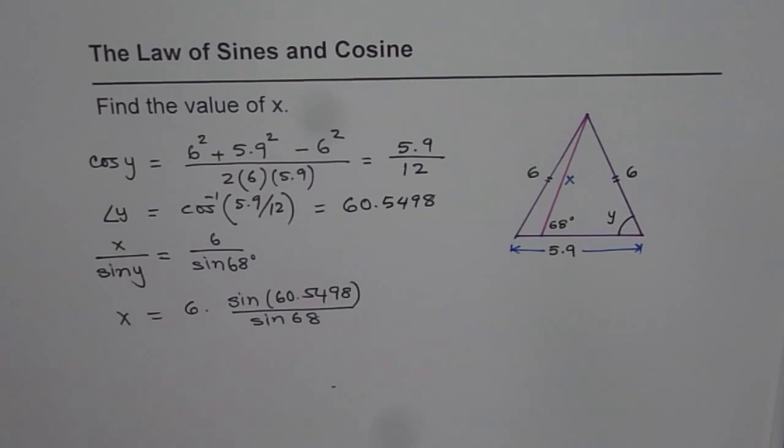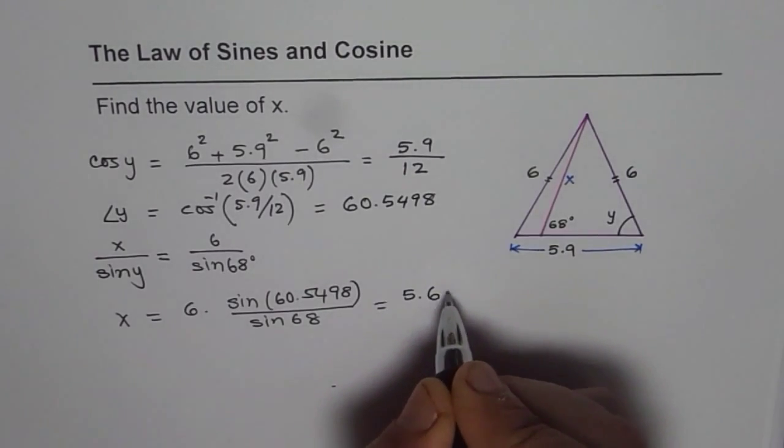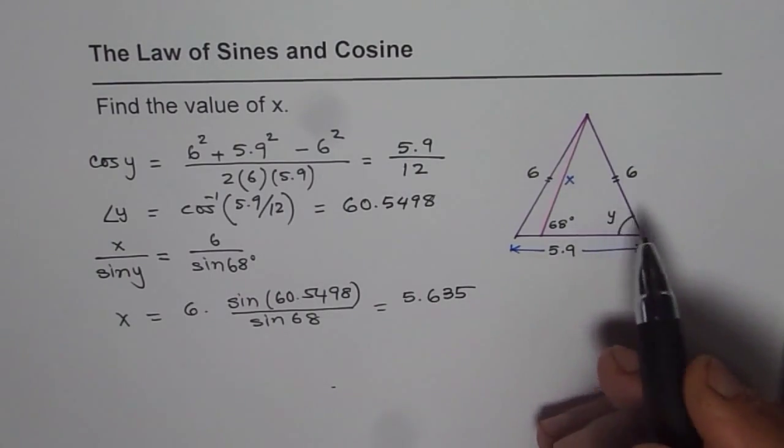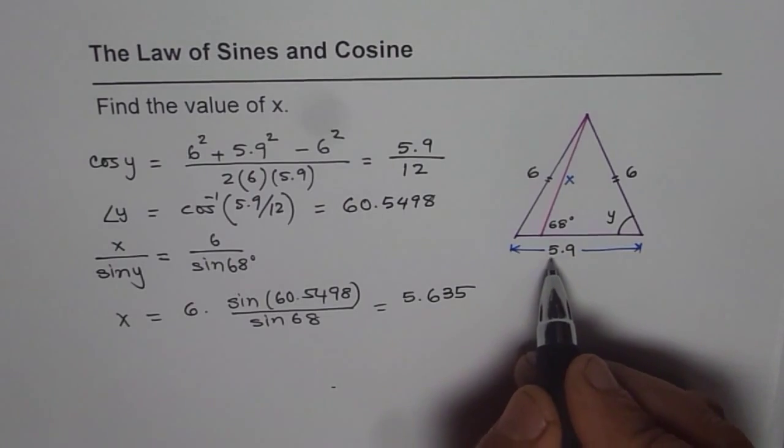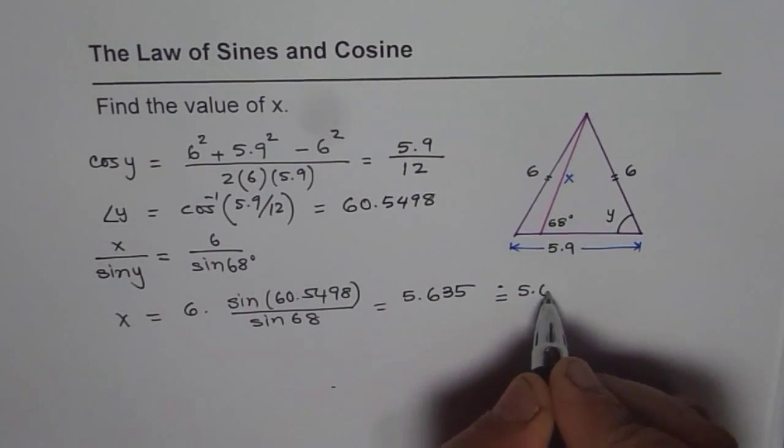We get 5.635. So that is the length of x. We can round it to one decimal place, since the other side is 5.9. So let me write this as 5.6 units.